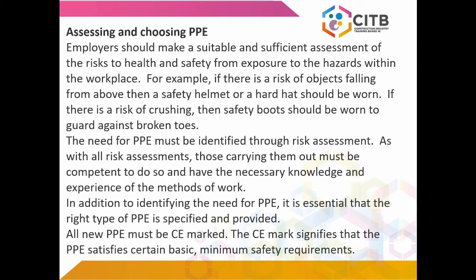So how do we assess and choose PPE? Employers should make a suitable and sufficient assessment of the risks to health and safety from exposure to hazards within the workplace. For example, if there is a risk of objects falling from above, then a safety helmet or hard hat should be worn. If there is a risk of crushing, then safety boots should be worn to guard against broken toes. The need for PPE must be identified through risk assessment, and those carrying them out must be competent with the necessary knowledge and experience. In addition to identifying the need, the right type of PPE must be specified and provided. All new PPE must be CE marked — the CE mark signifies that the PPE satisfies certain basic minimum safety requirements.